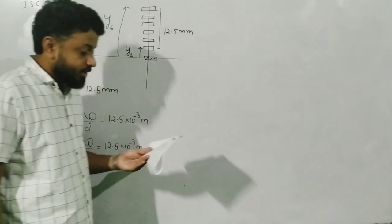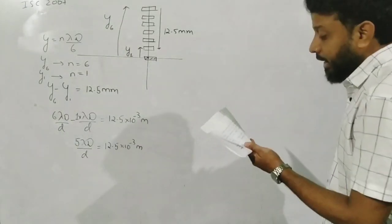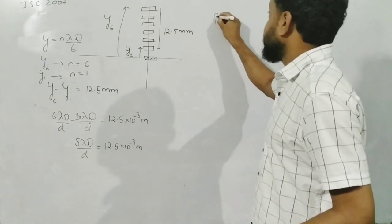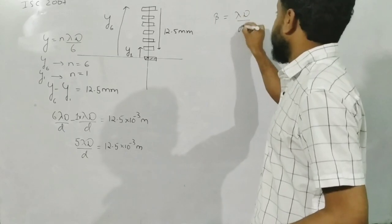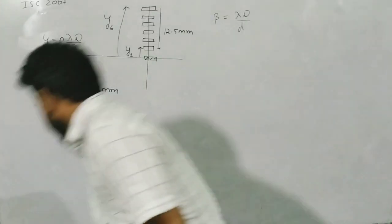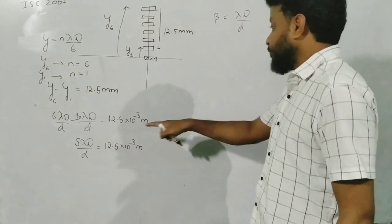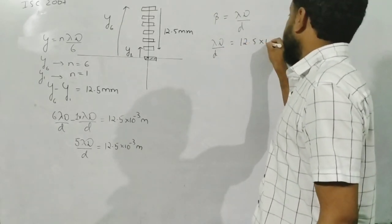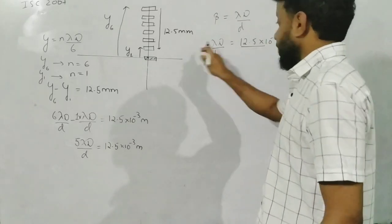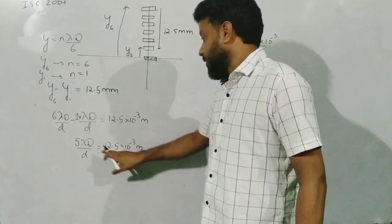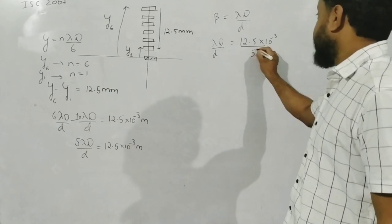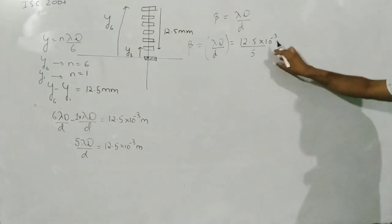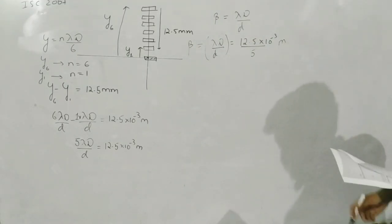Now the first question asks: find the fringe width. The fringe width β = λD/d. From our expression, 5λD/d = 12.5 × 10⁻³ m, so λD/d = 12.5 × 10⁻³ / 5 = 2.5 × 10⁻³ m. That is exactly the value of the fringe width. Remember, the order is in terms of meters.